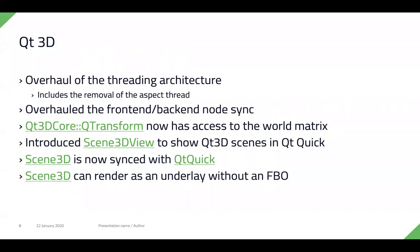Qt 3D has gotten quite a few improvements. There has been a larger overhaul of the threading architecture, removing what was called the aspect thread — an extra thread that caused overhead. There has also been an overhaul of node syncing between front-end and back-end classes. Both changes improve performance, removing significant CPU load and making Qt 3D more performant in general.